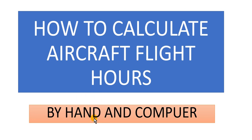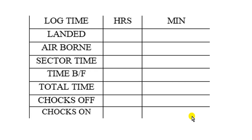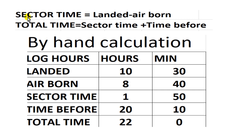Remember this part of the technical log book — for the times here. You have time in hours and minutes, the landed airport time, and the sector time. The sector time equals landed minus airborne. The total time here equals the time before plus the sector time. So: sector time = landed minus airborne, and total time = sector time plus time before.